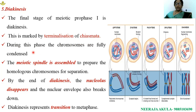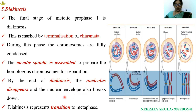During diakinesis, chromosomes are fully condensed and the meiotic spindle is assembled to prepare the homologous chromosomes for separation. By the end of diakinesis, the nucleolus disappears and the nuclear envelope also breaks down. Diakinesis represents the transition to the metaphase stage.